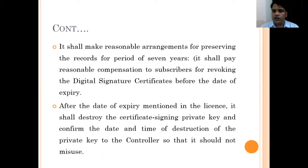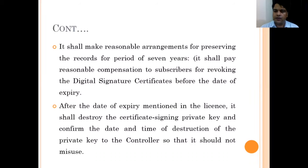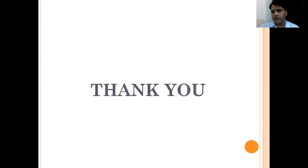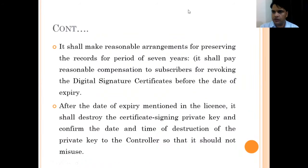It is also required for the certifying authorities that they maintain records for at least seven years — even after they cease to be a certifying authority — about their functions which they carried out throughout their services as a certifying authority. Lastly, it is required that when a certifying authority ceases to be a certifying authority, they will have to destroy their private key used for the generation of digital signature certificates, and send this intimation to the controller that the private key has been disposed of.